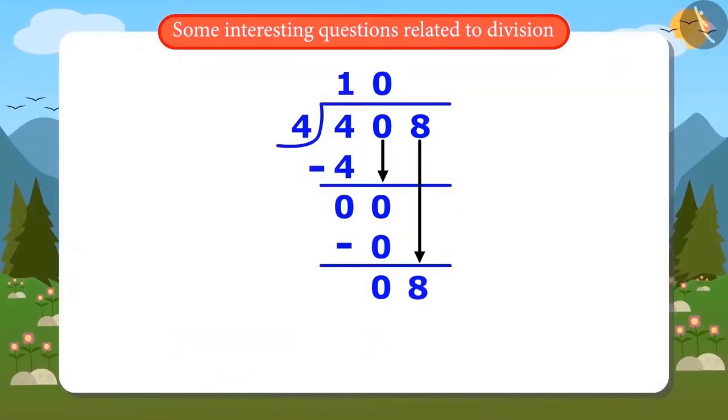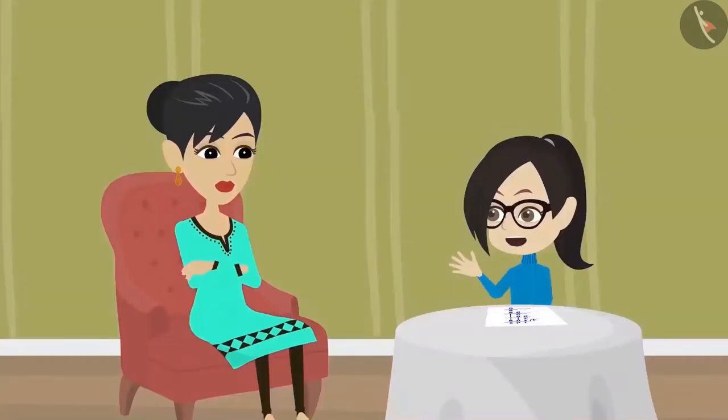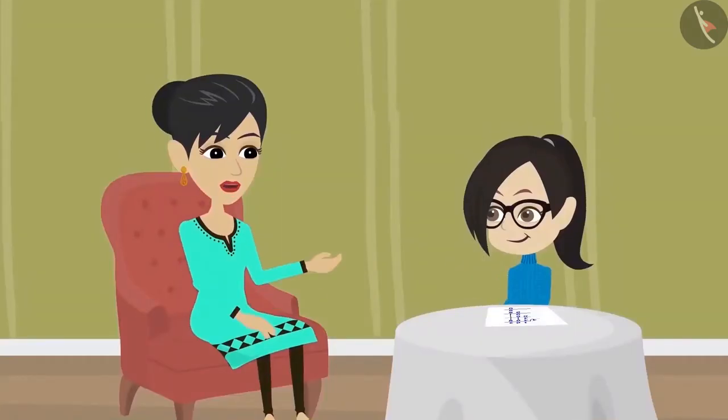Now write down 8 and divide 8 by 4. The answer is 2 because 4 multiplied by 2 is 8 and the remainder is 0. So, this means that 408 divided by 4 is 102. Isn't that right mother? You check it yourself.